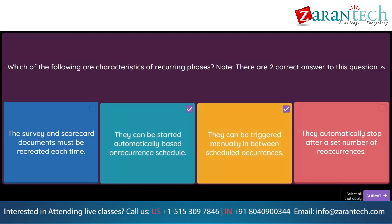Question. Which groups should your customer consider removing from users if they want to reduce their user licenses in SAP Ariba Supplier Lifecycle and Performance? Note, there are two correct answers. Option 1: Supplier qualification manager. Option 2: Supplier internal questionnaire editor. Option 3: SM modular questionnaire manager. Option 4: Sensitive data access.